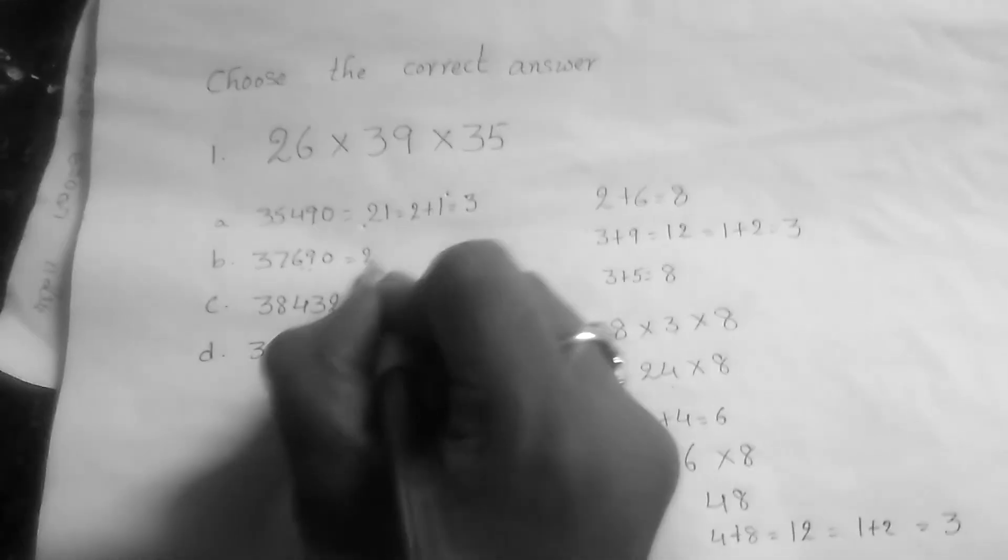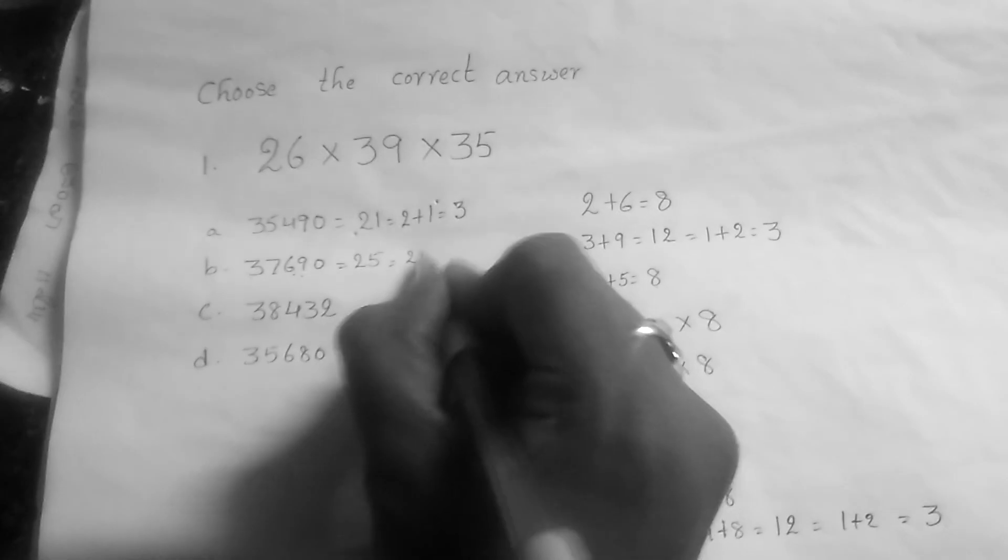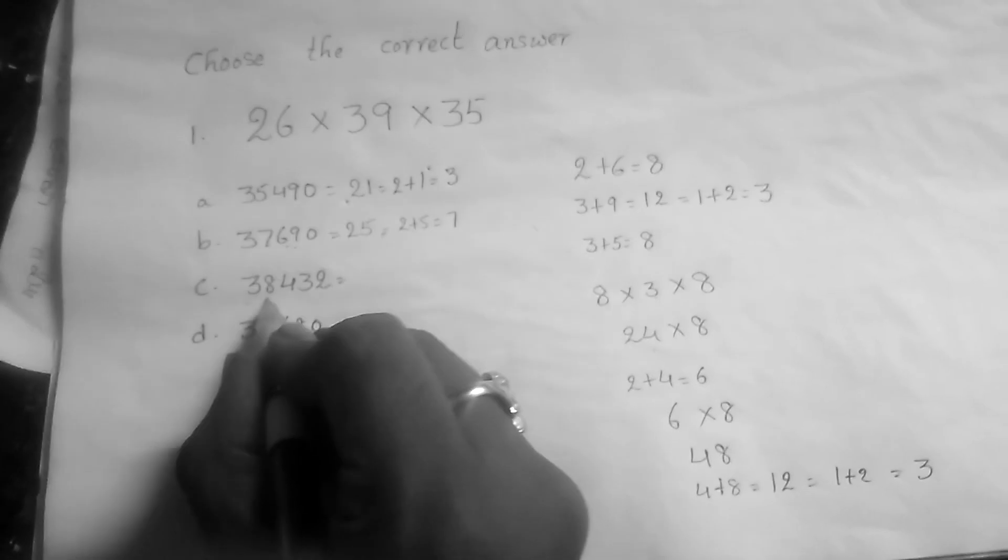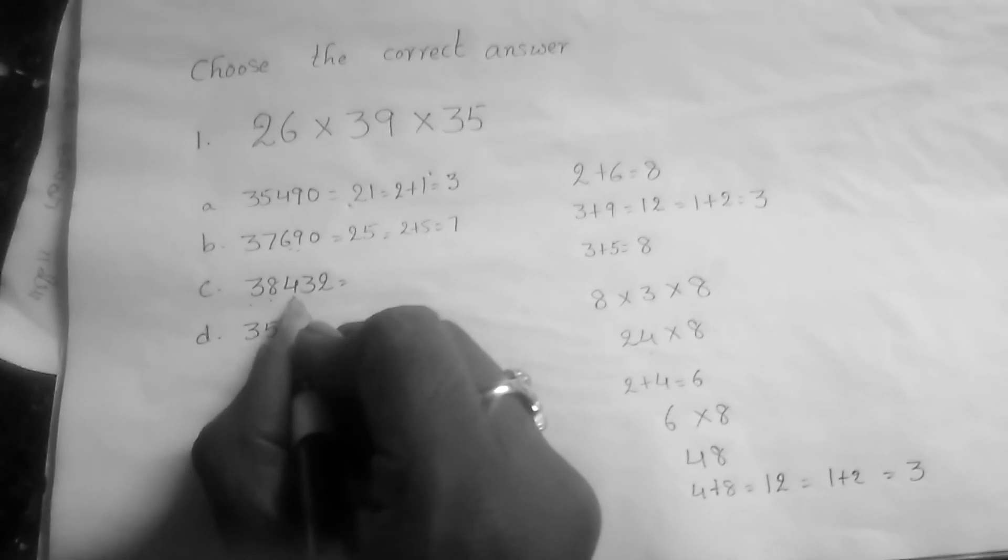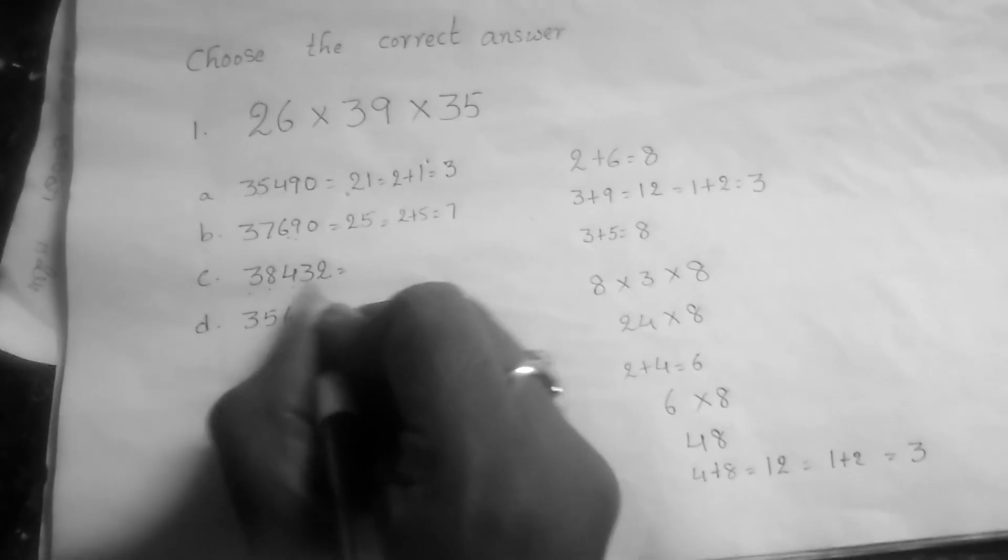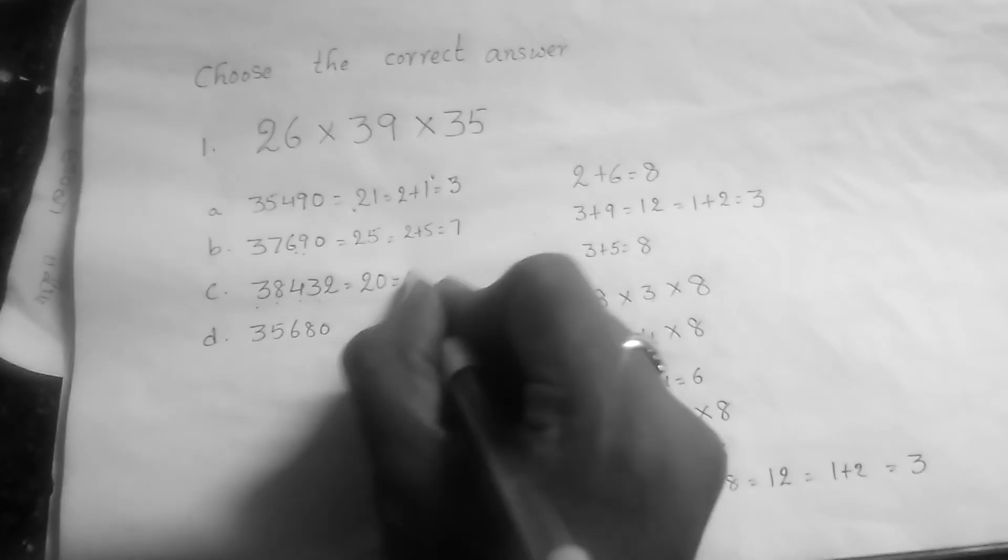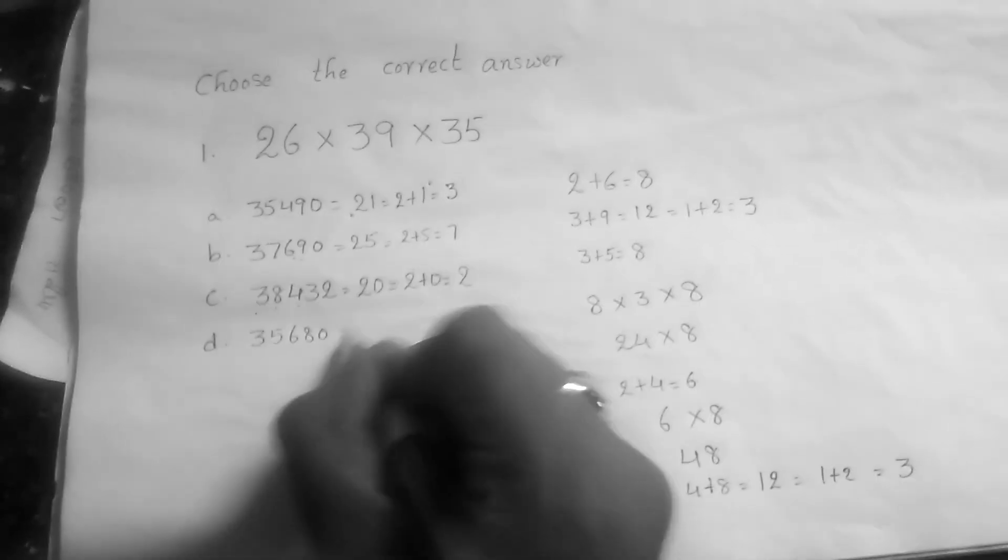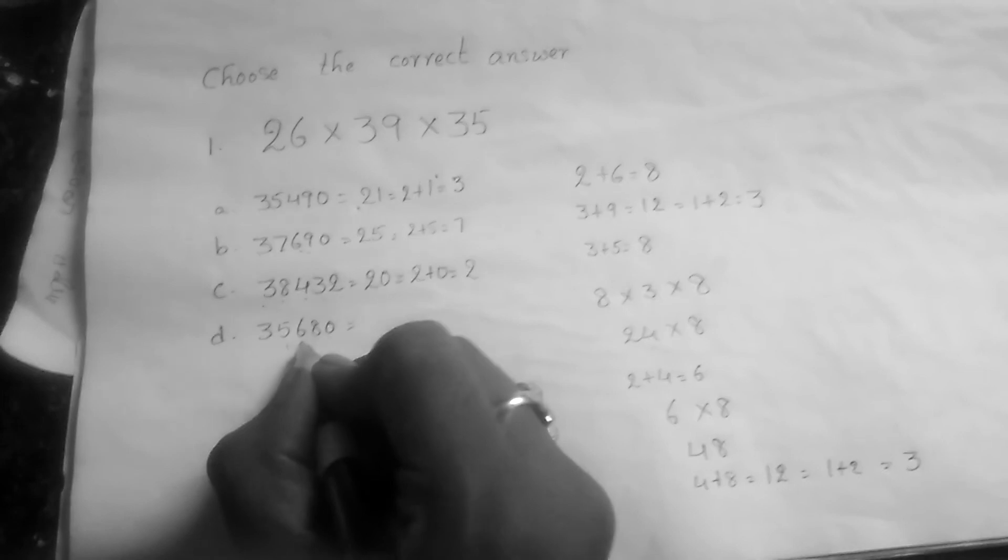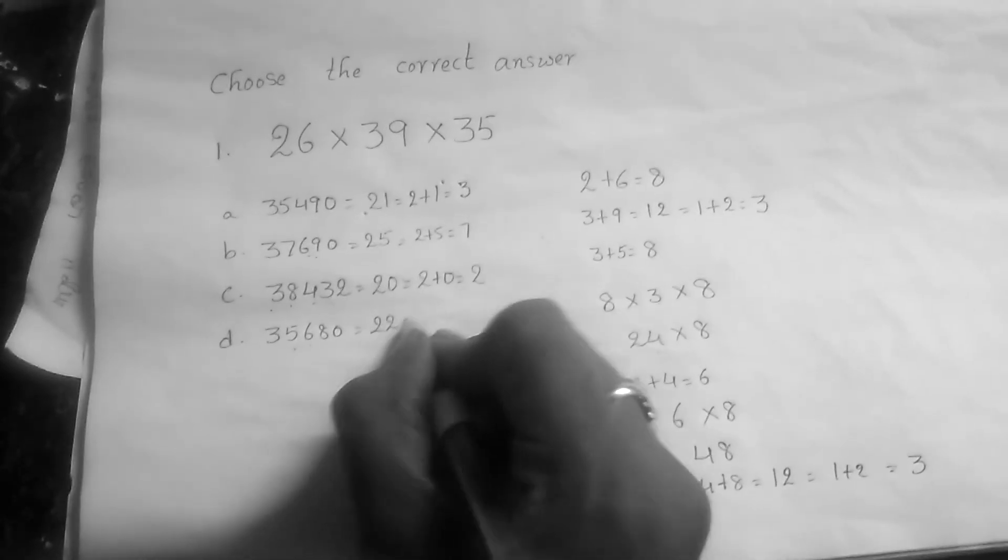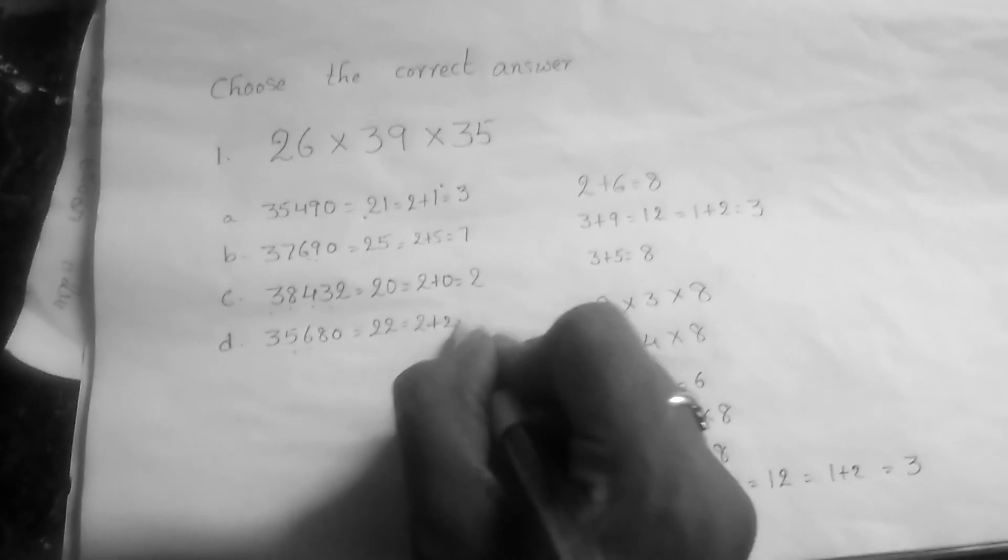Option C: 3 plus 8 is 11, 11 plus 4 is 15, 15 plus 3 is 18, 18 plus 2 is 20, 20 plus 8 is 28. Option D: 3 plus 5 is 8, 8 plus 6 is 14, 14 plus 8 is 22, 22 plus 0 is 22, and 2 plus 2 equals 4.